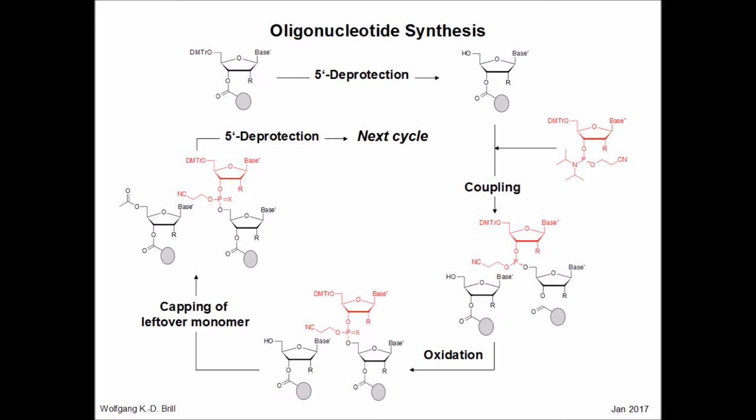The 5'-hydroxy function is involved in the condensation with a phosphoramidite, shown in red, giving a dinucleotide trialkylphosphide bound to the polymeric support, as seen in the lower right corner of this slide. As you may notice, some of the original support-bound starting material has not reacted.